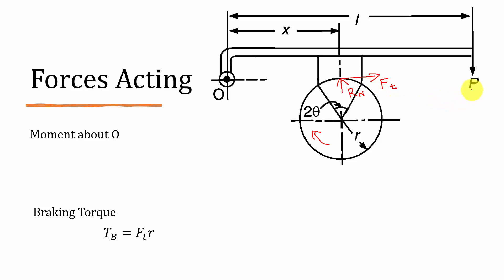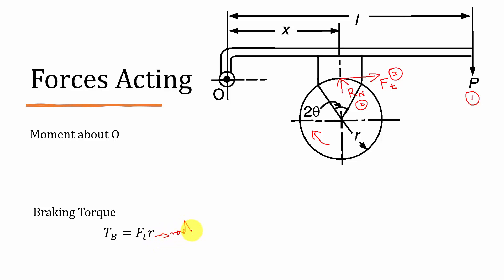So in a single shoe brake there will be three forces: one is the force P at the end of the lever, second is the normal reaction Rn, and third is the tangential force Ft. In general, in single shoe brake problems the force P will be given and we are asked to calculate the braking torque. The equation for braking torque Tb is equal to Ft into R, where R is the radius of the drum and Ft is the tangential force.